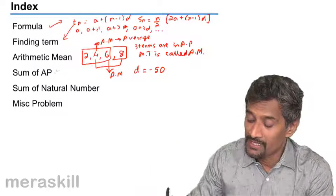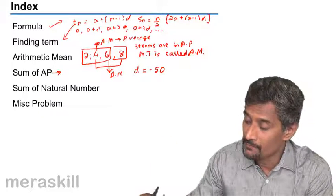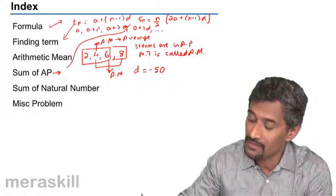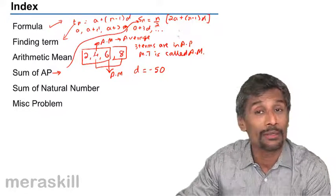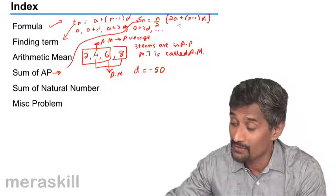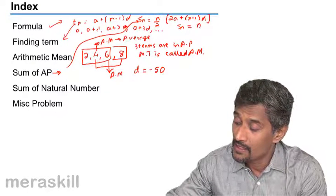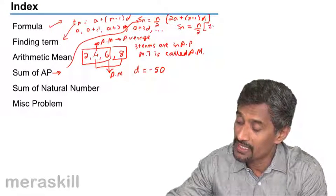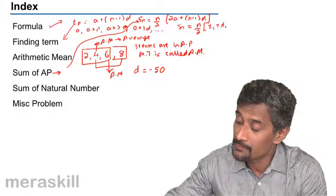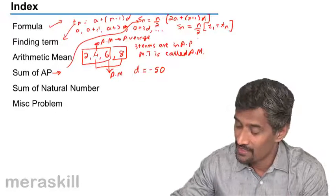Then sum of AP - we use this formula. Sn is equal to n by 2 into 2a plus n minus 1 into d. And remember one more formula for our ease: n by 2 into first term plus the last term.